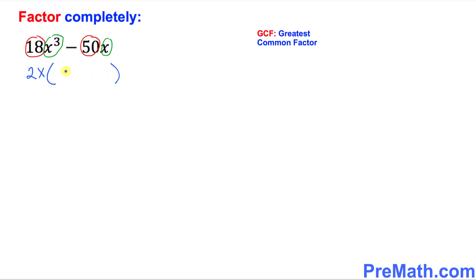Once you factor this one out, inside the parentheses is going to be simply 9x square minus 25. So far so good? Once again, if you're not sure, just simply distribute this one. You're going to get 2x times 9x square, which is going to give you 18x power 3 minus 50x. This is what you're going to look at.